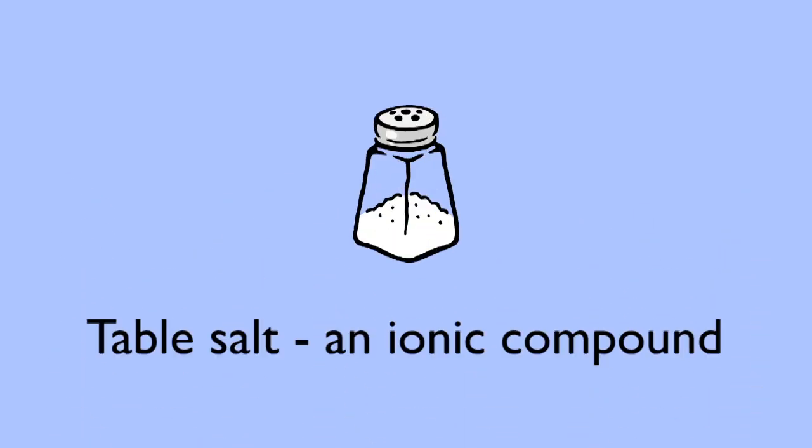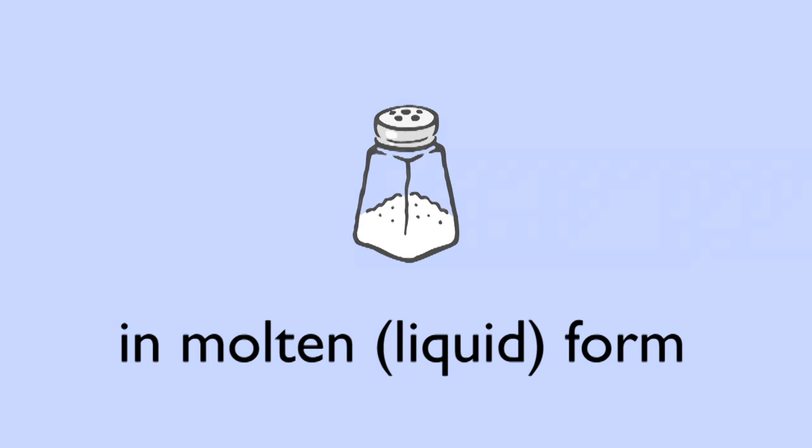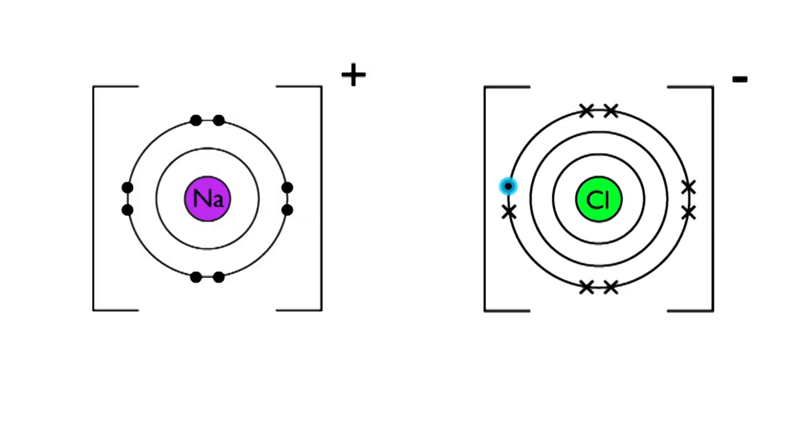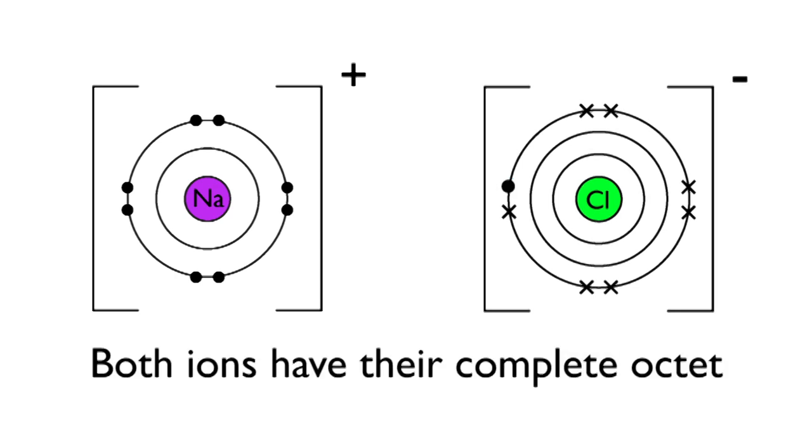Think of the common salt, an ionic compound, sodium chloride. In a molten environment, the sodium has donated one electron to the chloride to form an ionic bond, so both ions have their complete octet and are very stable and happy.